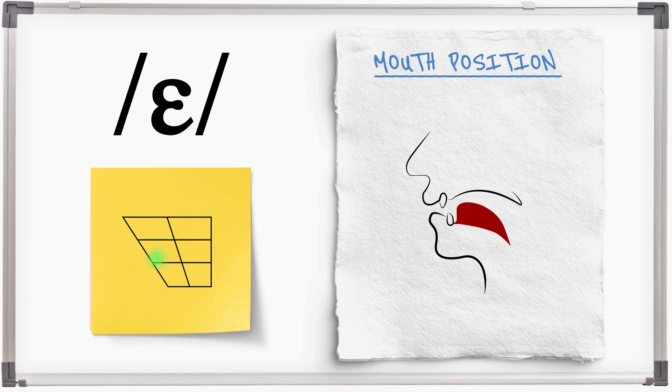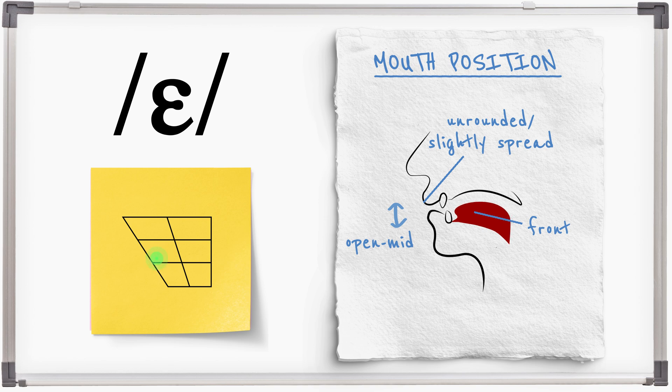E is made with an open mid-jaw, front tongue and relaxed or slightly spread lips. E.